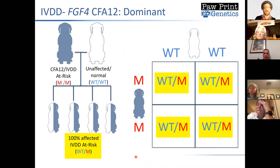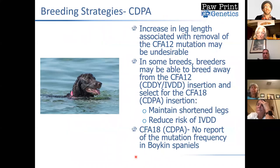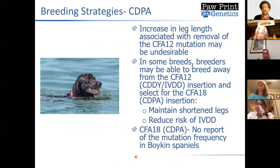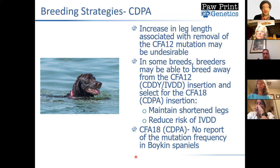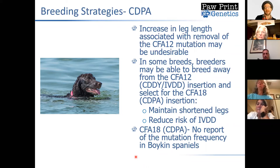In addition to genetic diversity, we have to think about leg length. It's very possible that in some cases the removal of the chromosome 12 mutation may result in a leg length increase that could be undesirable. As mentioned, the chromosome 18 mutation could potentially be used in some breeds to maintain leg length, but right now I don't have information suggesting Boykins actually have this mutation. In the future, if they do, those dogs could be bred into a line where you've already eliminated the IVDD mutation to get legs a little shorter again without the disease risk. But I don't know how helpful that's going to be in the Boykin.